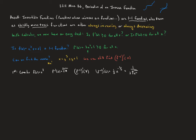Evaluating the derivative of the inverse at 8: we get 1 over 3 times the cube root of 8 squared. The cube root of 8 is 2, and 2 squared is 4, so 4 times 3 is 12 — giving us 1/12. Notice that f⁻¹(8) = 2, so at the point (8, 2) on the inverse, the slope of the tangent line is 1/12.